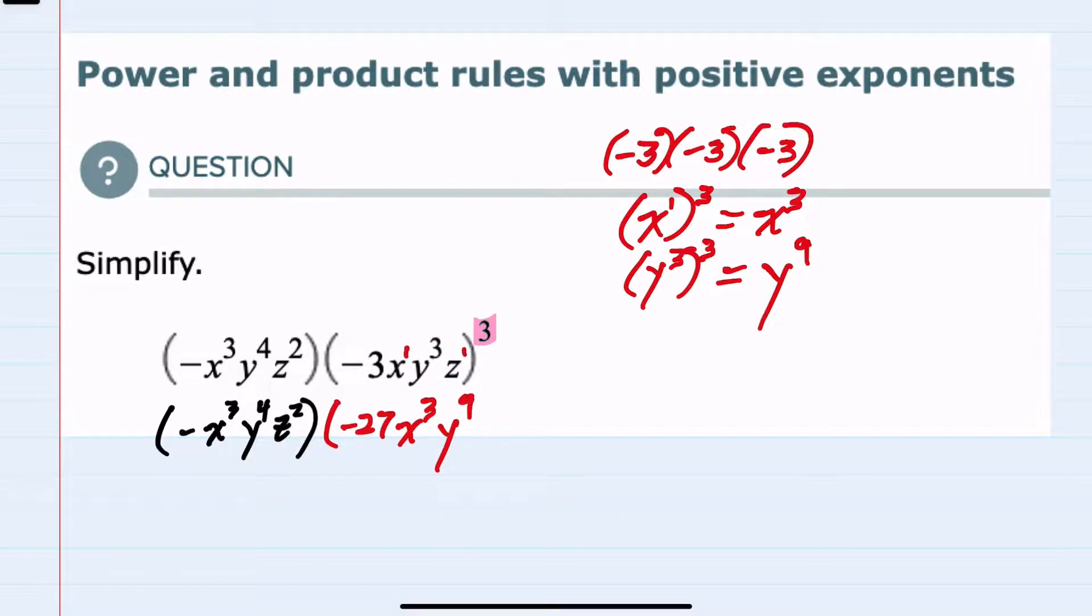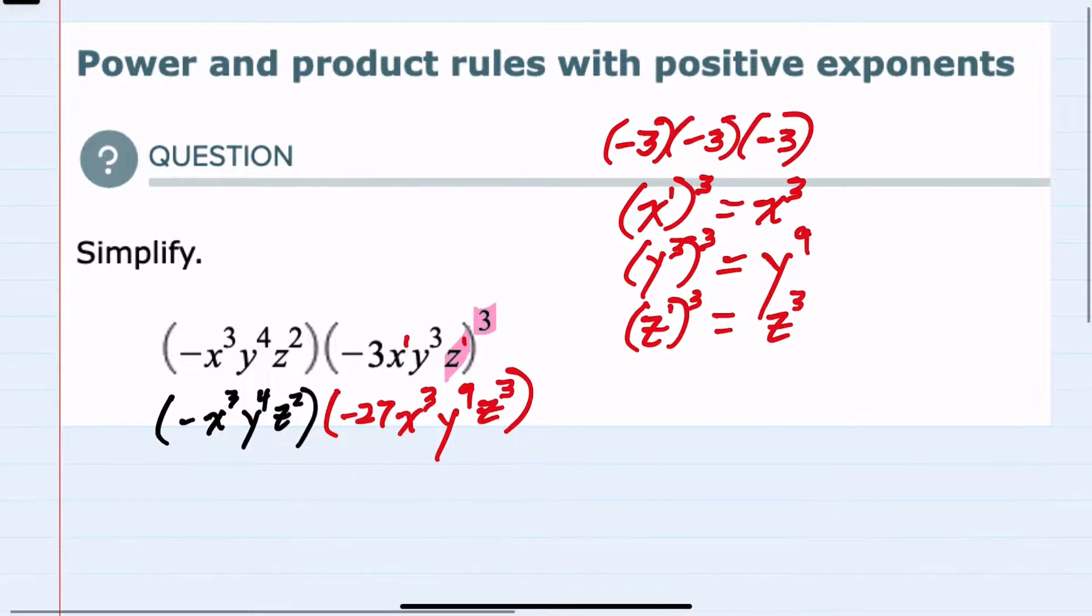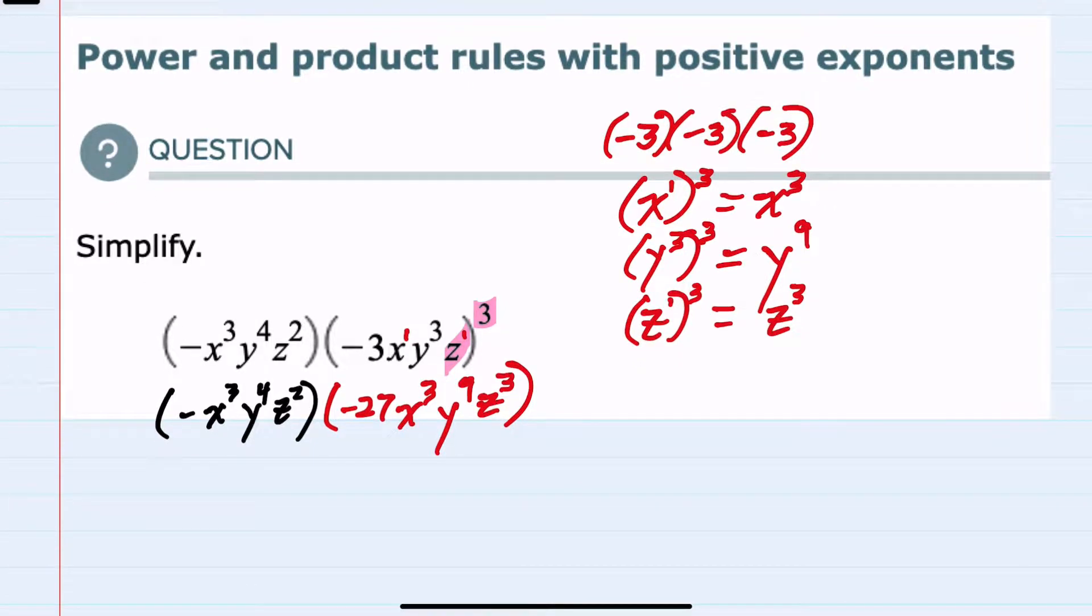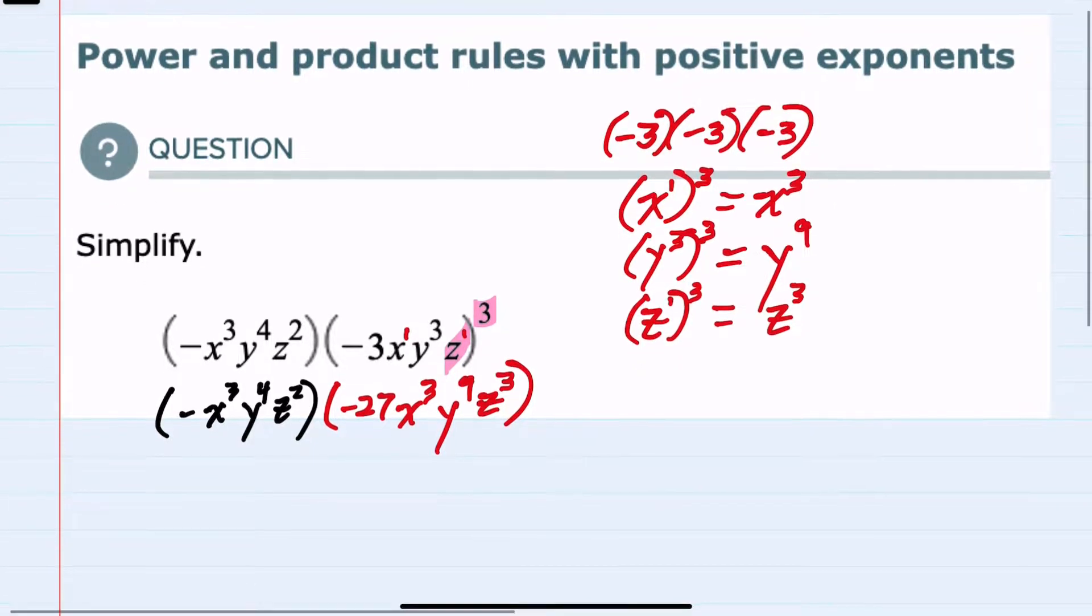And then our z is also to the power of 1, so it's raised to the third power on the outside. And when our power inside and outside, they're multiplied. So z to the third. So far we have simplified by raising everything in the second parentheses to the third power.